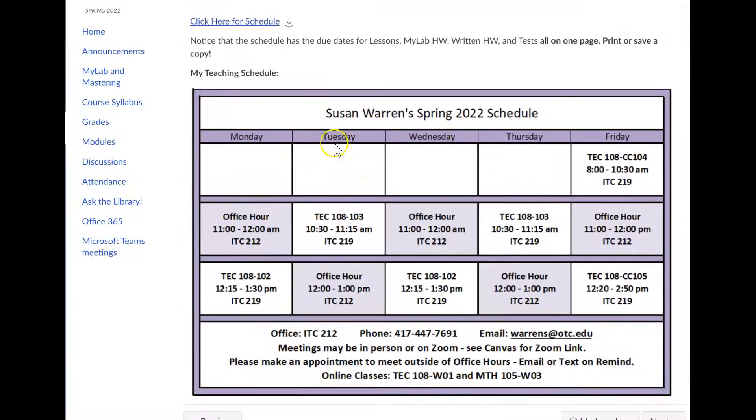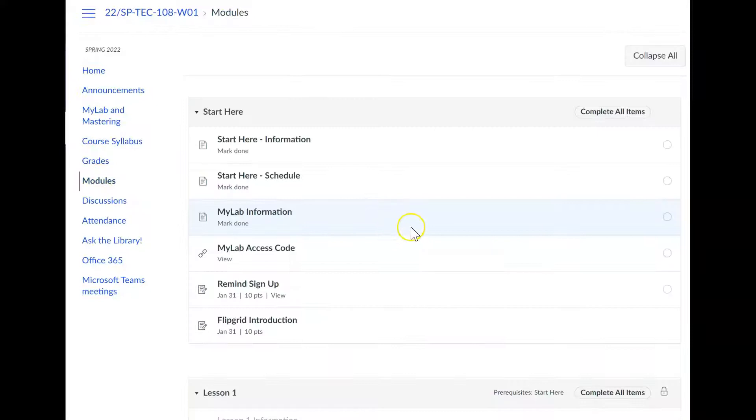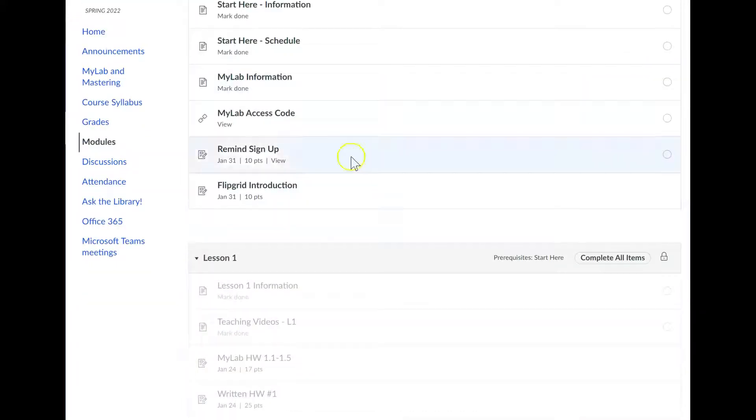And then I'm not going to go through the entire module, but I'm going to go back to notice you can always just click on modules to get back to any of the modules that I have set up. My lab information explains how to sign up for my lab. Basically, you need this code first. And so you can before you click here. So read this, get your code, click here.